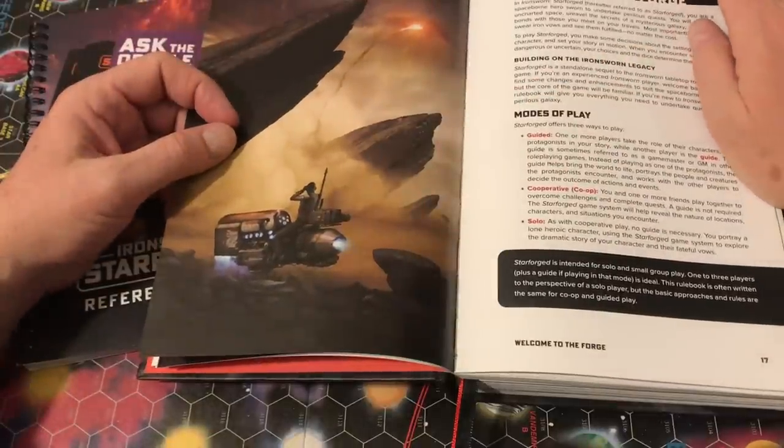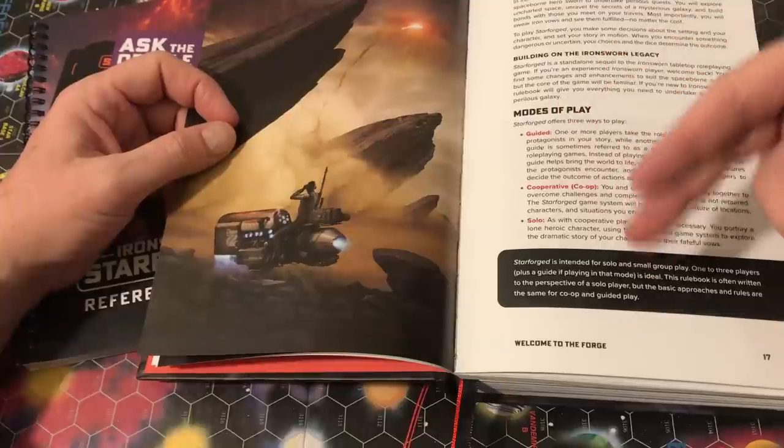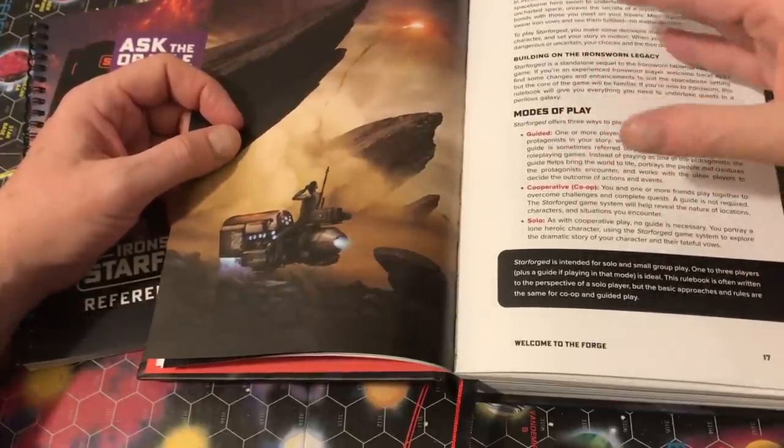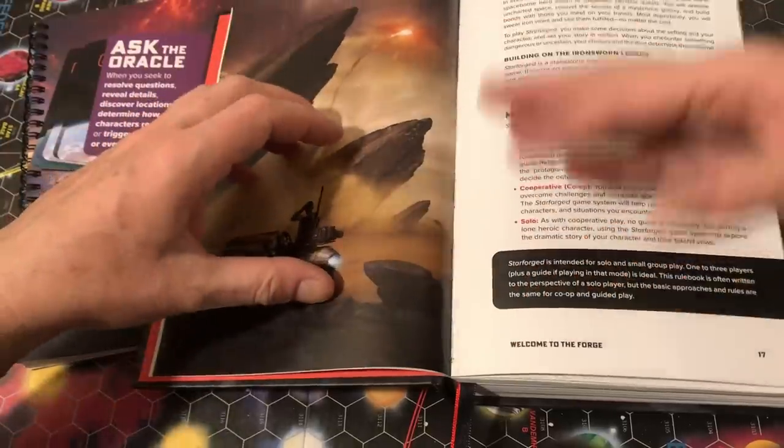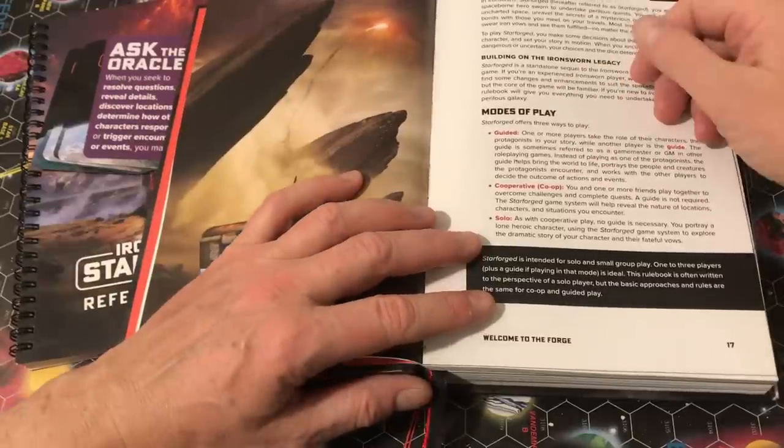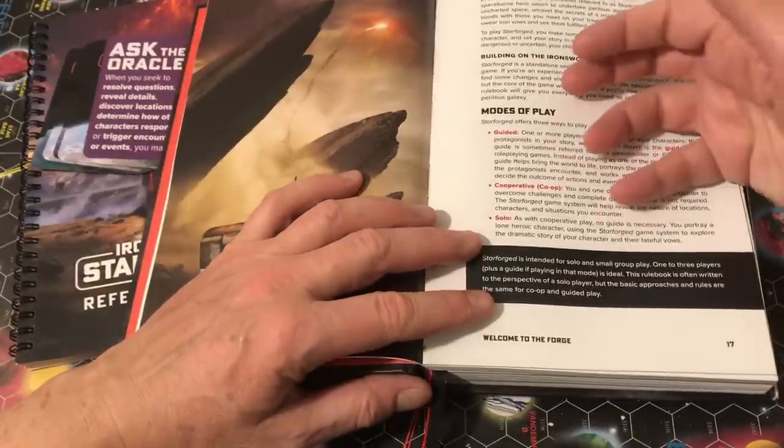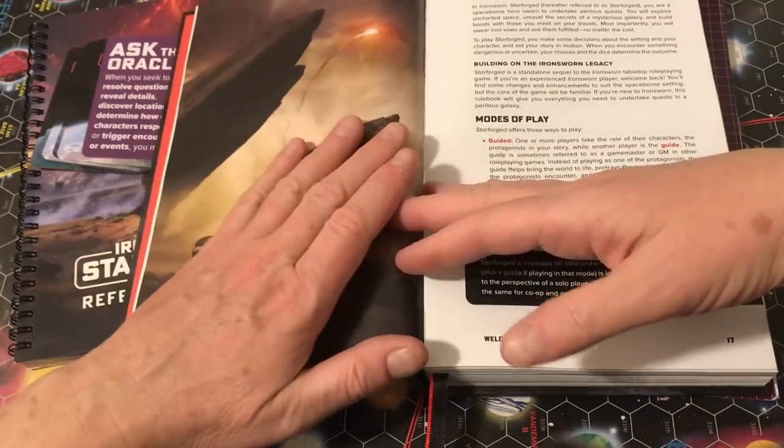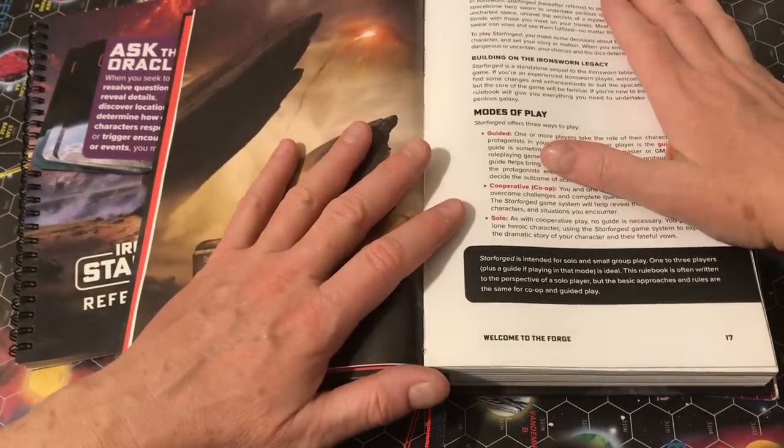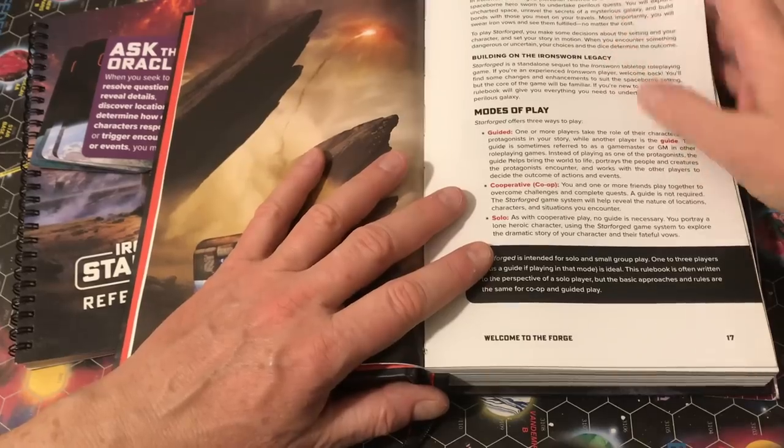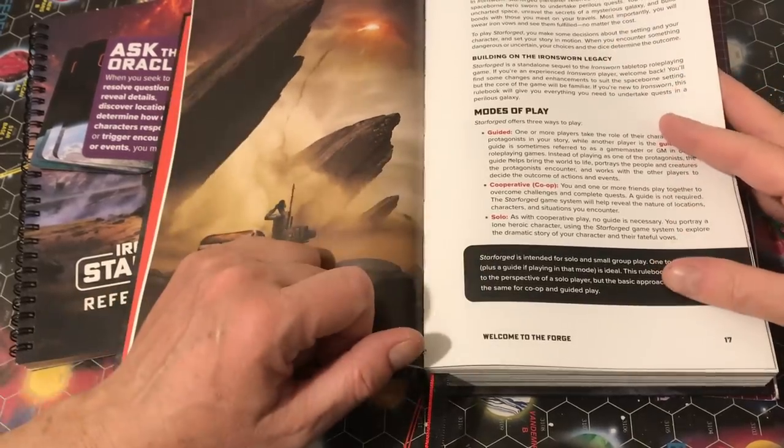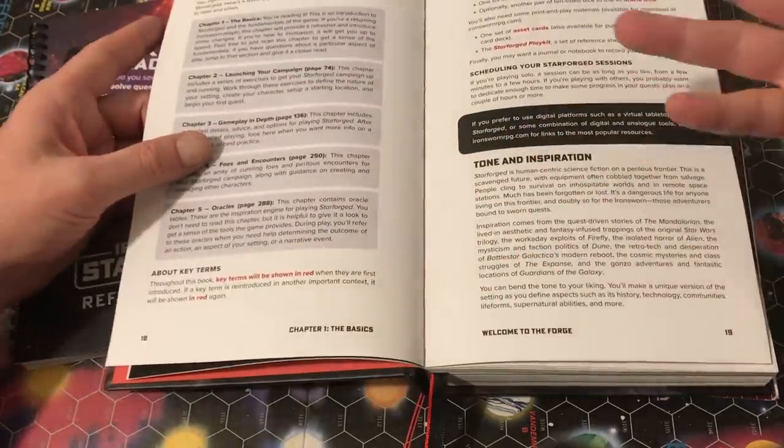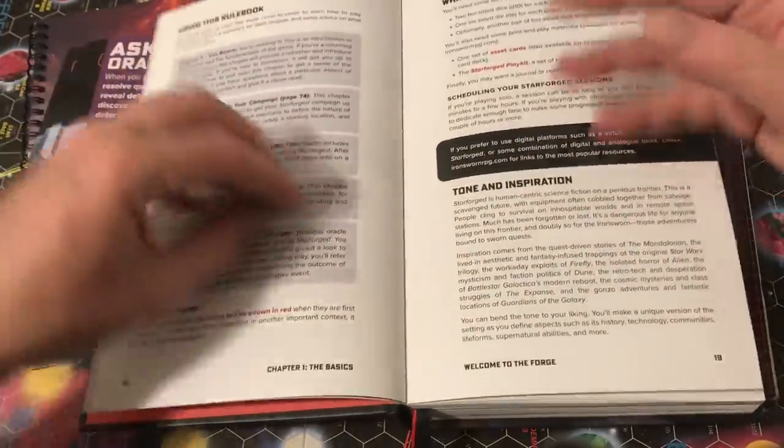There are different modes of play for Starforged and for Ironsworn. There's the guided play, which is a traditional sort of GM or storyteller and person or persons. There's co-op, where you can play with a group of friends together, and I have not done this yet. It's something I really want to do, because I think that it would be phenomenal. And then there is solo, and that's what I'm going to explore here with you in this video.